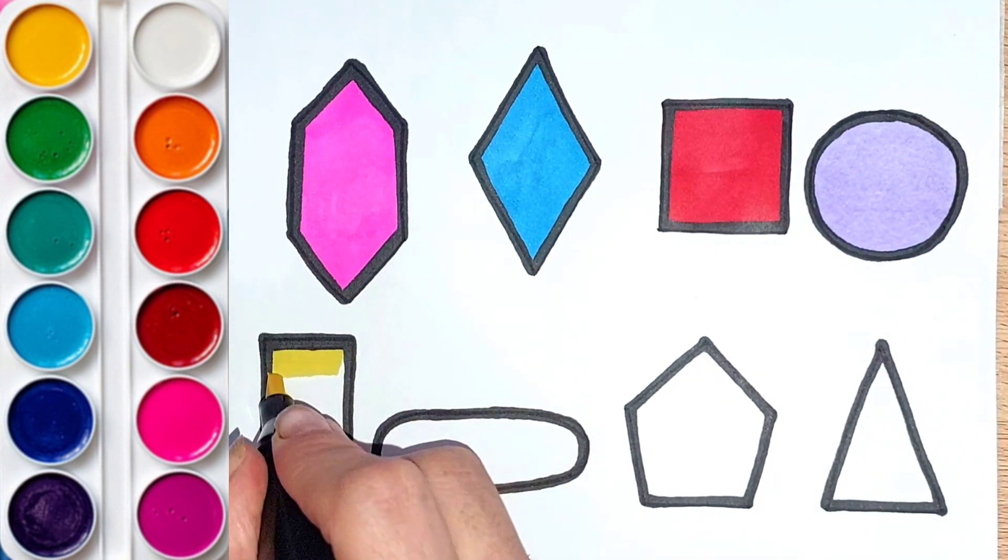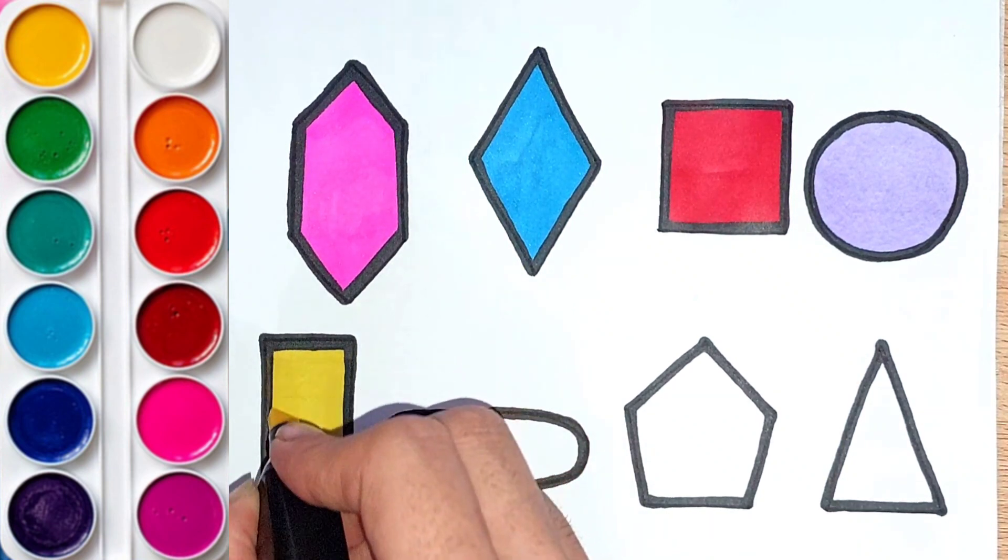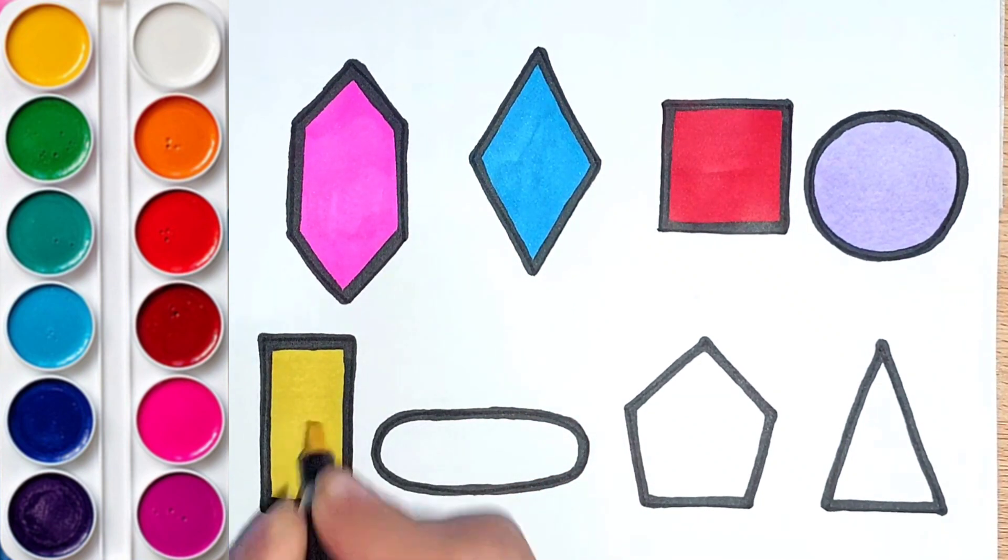Yellow color. Rectangle, square, and other shapes have four corners.